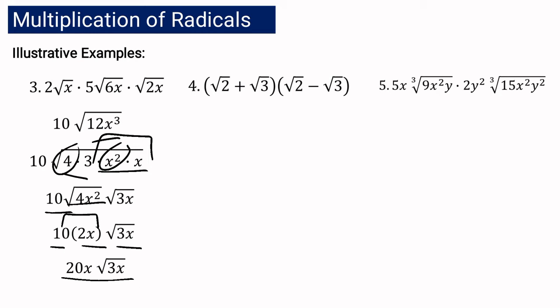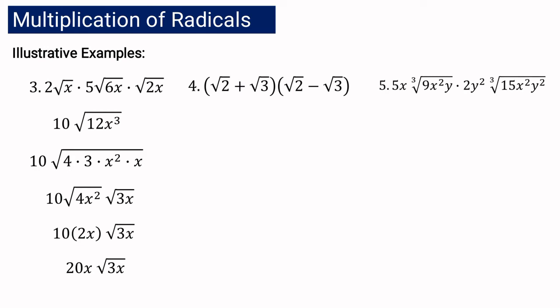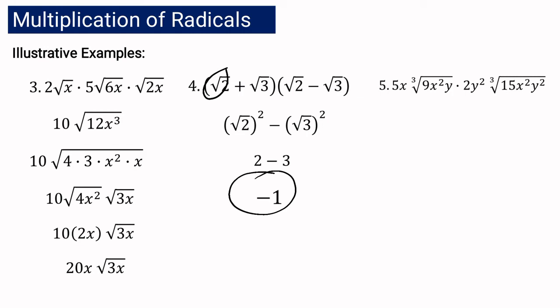Let us proceed with example number 4. We have the quantity square root of 2 plus square root of 3, multiplied by the quantity square root of 2 minus square root of 3. These are two binomials that are radical expressions. This is an example of sum and difference of two binomials, because we have the same first term and the same last term, with addition in one and subtraction in the other. To simplify, we square the first term minus the square of the last term. Square root of 2 squared is 2, and square root of 3 squared is 3. So we have 2 minus 3, and the answer is negative 1.